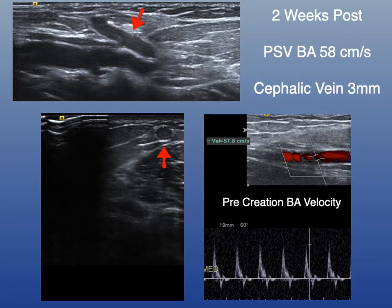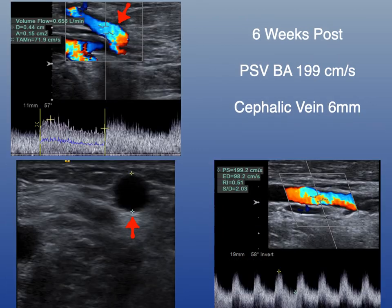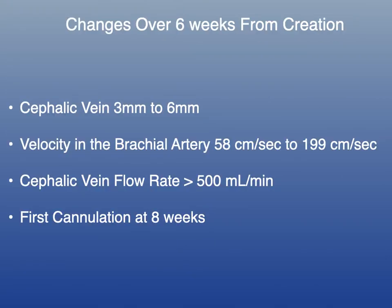At two weeks, the cephalic vein measured about three millimeters and peak systolic velocity of the brachial artery was 58 centimeters per second. At four weeks, brachial artery velocity had increased to 181 centimeters per second and the cephalic vein grew from three to five millimeters. By six weeks, flow was nearly 200 centimeters per second, the cephalic vein had doubled to six millimeters, and was no deeper than six millimeters under the skin — ready for cannulation. Cephalic vein flow rate was greater than 500 milliliters per minute, and first cannulation was performed at eight weeks.